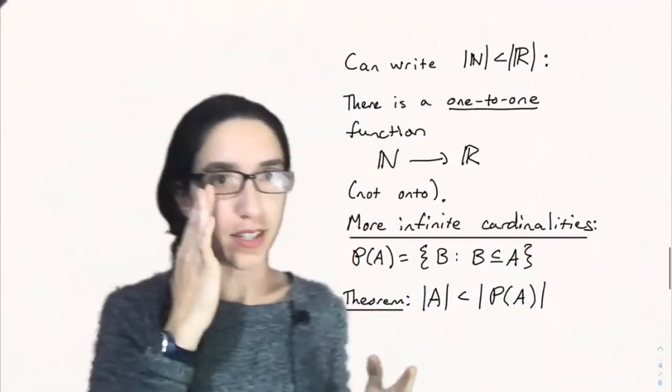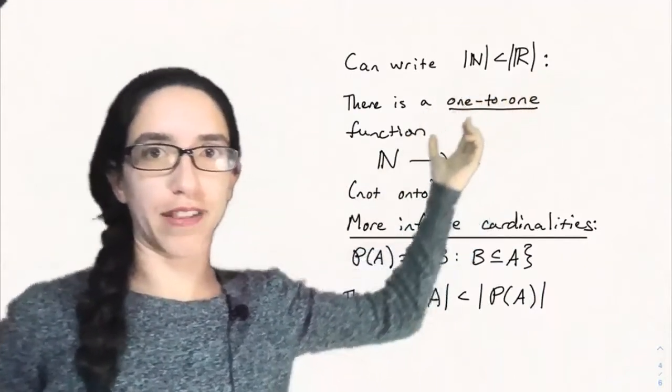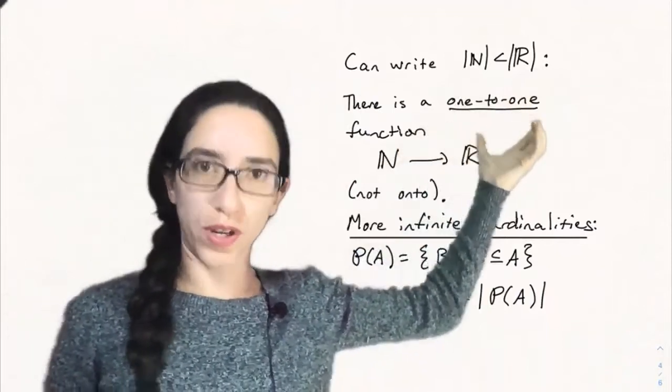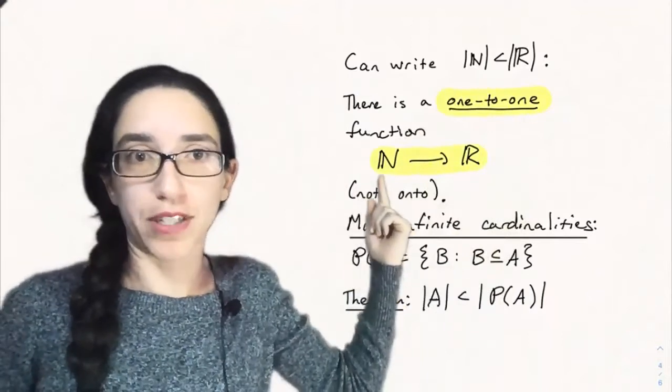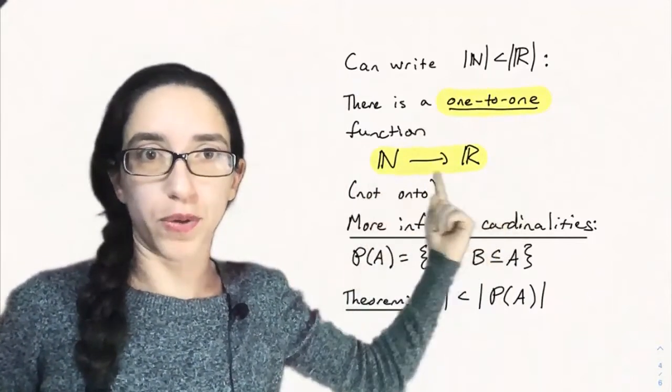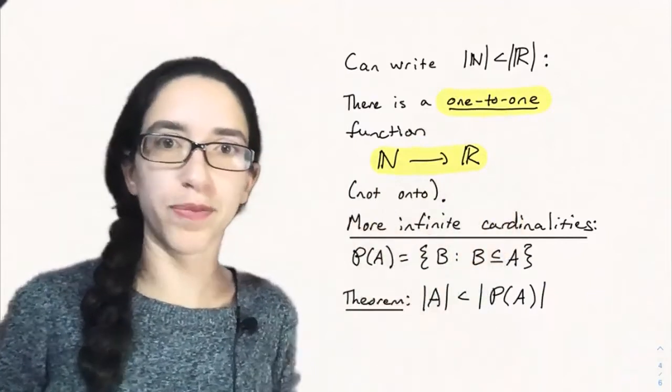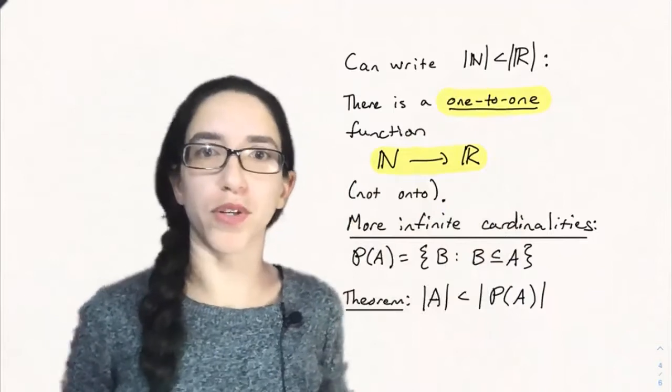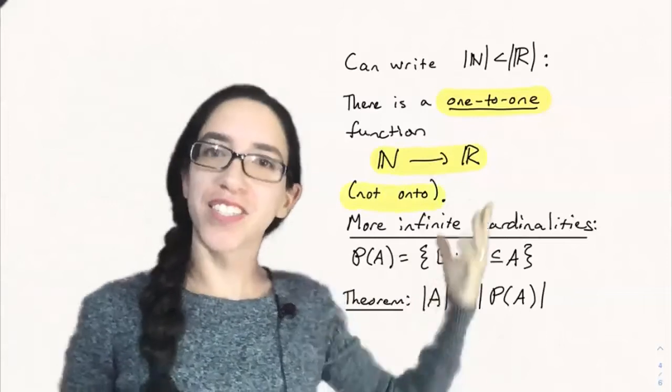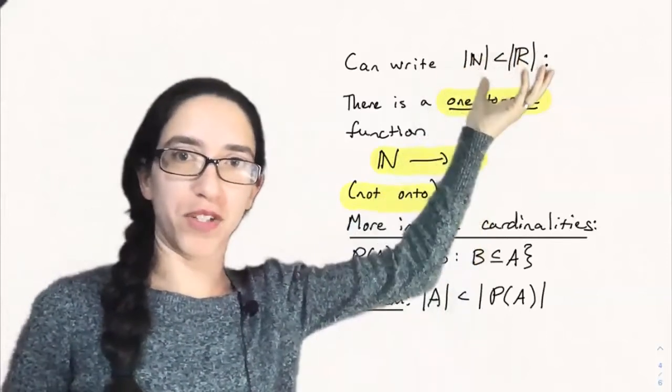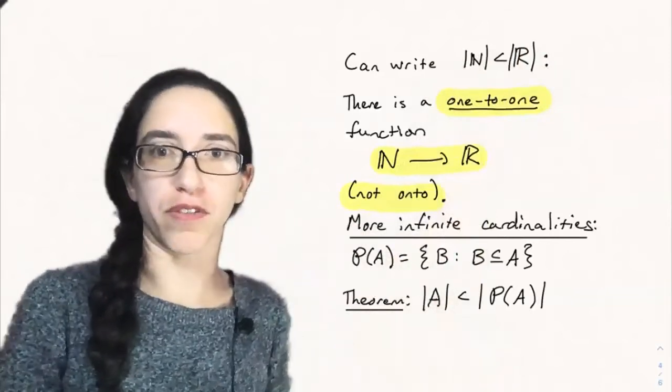We can in fact state this a little more precisely by saying the size of N is actually less than the size of R in the sense that there's a one-to-one function from the natural numbers to the real numbers given by just mapping every natural number to itself. So no two elements here go to the same element there. So it's contained as a subset in other words, but that's not an onto map. And so that doesn't show it's equal, which is good because they're not equal sizes. But it does show that this is what we mean by two cardinalities being less than or comparable to each other if one can be sort of embedded in the other.